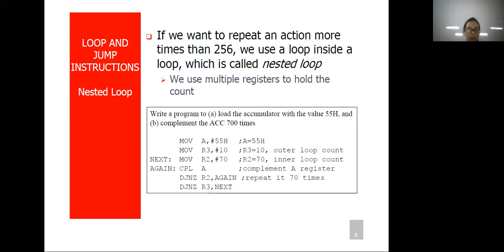If you want to run your loop more than 255 times, then we use the concept of nested loop — a loop inside a loop — in order to divide your count, because the count limit is only up to 255. For example, if you want to run your loop 700 times, it has been divided into two register parts: one register is having data 10, another one is having data 70. The inside loop will run 70 times and the outside loop will run 10 times, so 70 into 10 gives 700 total iterations.